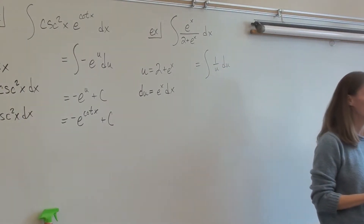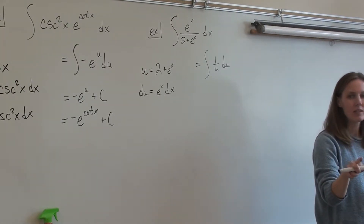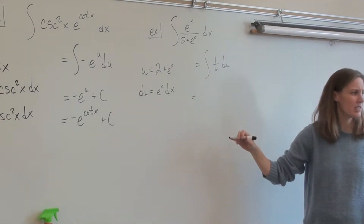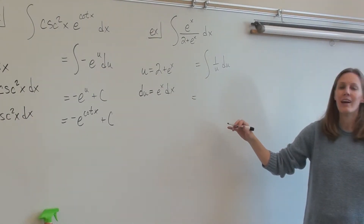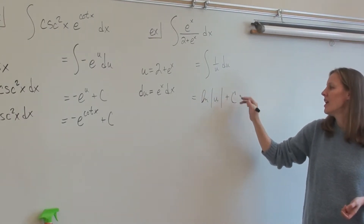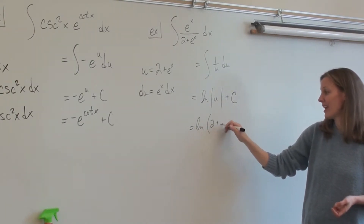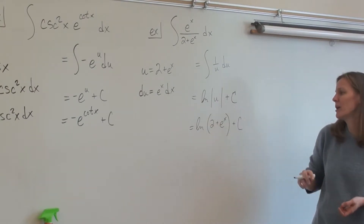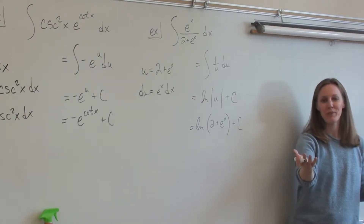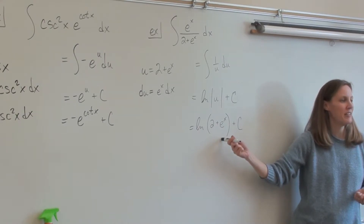How did you do with rewriting your integral? Use the denominator for your u — one over u. What's the antiderivative of this? Ln of the absolute value of 2 plus e to the x. And I'm going to drop that absolute value because e to the x is always positive.